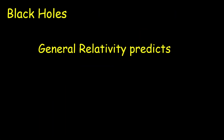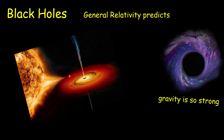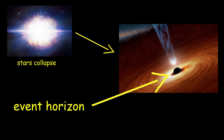Black holes: general relativity predicts the existence of black holes, which are regions of space where gravity is so strong that not even light can escape. They form when massive stars collapse under their gravity, compressing into a very small space. The boundary around a black hole, beyond which nothing can escape, is called the event horizon.